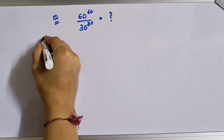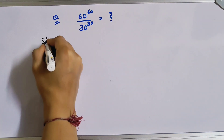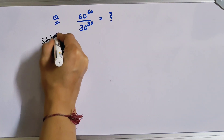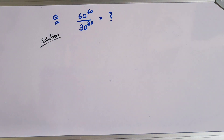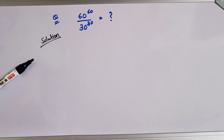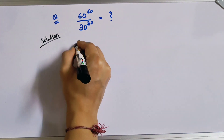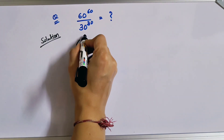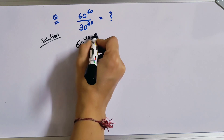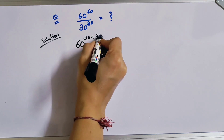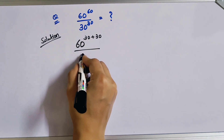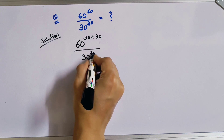Hello friends, good evening. So today we will solve a nice exponential problem: 60 to the power 60 divided by 30 to the power 30 equals what? We will first write this as 60 to the power 30 plus 30, divided by 30 to the power 30.